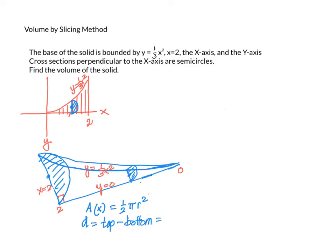The diameter is the top function minus the bottom function. So the diameter is going to be 1/3 x squared minus the bottom function. The bottom function is 0, y equals 0. Going anywhere along the x-axis and taking a perpendicular cross-section, we get y equals 1/3 x squared minus y equals 0 as our diameter. To find the radius, take 1/2 of that: 1/2 of 1/3 x squared. Simplifying, we get radius equals 1/6 x squared.